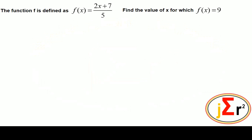The function f is defined as f(x) = (2x + 7) / 5. Find the value of x for which f(x) = 9.